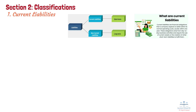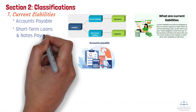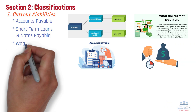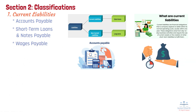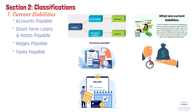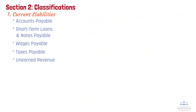Examples of current liabilities include: Accounts Payable, which refers to money owed to suppliers for goods or services purchased on credit; Short-term Loans and Notes Payable, which refers to borrowings that must be repaid within a year; Wages Payable, which refers to salaries and wages owed to employees but not yet paid; Taxes Payable, which refers to income taxes, sales taxes, and payroll taxes owed to the government; and Unearned Revenue, which means advance payments received from customers for goods or services yet to be delivered, such as prepaid subscriptions.